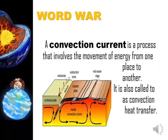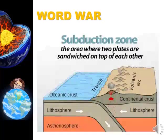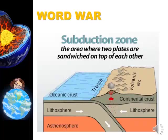Now, let me introduce more vocabulary. You may already know that the word current is synonymous with flow. A convection current is a process that involves the movement of energy from one place to another, also known as convection heat transfer. When two tectonic plates meet at the subduction zone, one bends and slides underneath the other, curving down into the mantle. Subduction zones are where the cold oceanic lithosphere sinks back into the mantle and is recycled — we can call this the recycling zone. Trenches are formed by the process of subduction.